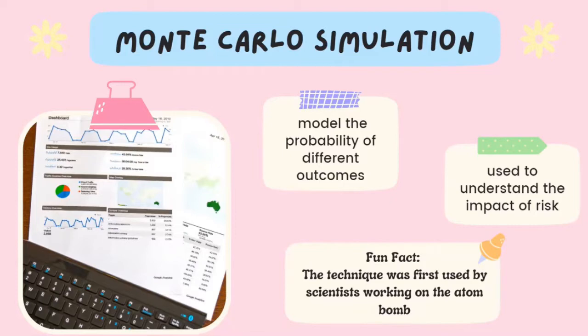It is important to mention the following. First, Monte Carlo simulations help to explain the impact of risk and uncertainty in prediction and forecasting models. Second, the basis of a Monte Carlo simulation involves assigning multiple values to an uncertain variable to achieve multiple results and then averaging the results to obtain an estimate. And last but not least, Monte Carlo simulations assume perfectly efficient markets. Finally, as a fun fact, the technique was first used by scientists working on the atom bomb.